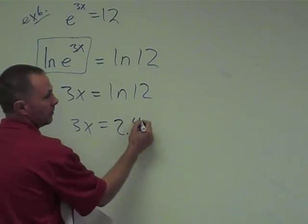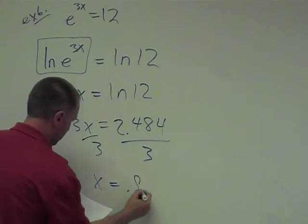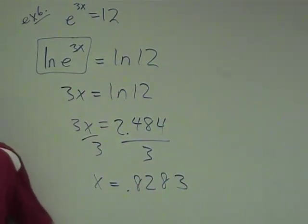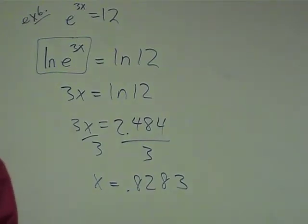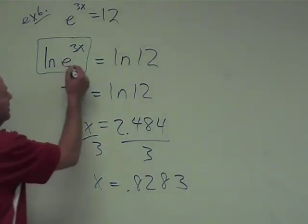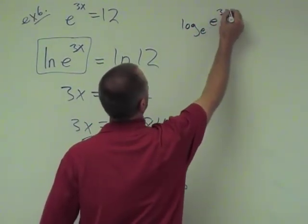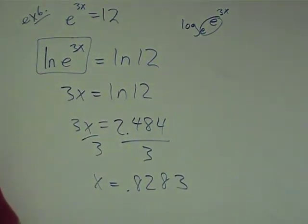Divide by 3 to get rid of the 3. This is the same thing as the log base e of e to the 3x. And if you have those being the same, the answer is just 3x. And that's the whole point. If you can take the log of both sides and change the way your exponents look, then that's what we want to do. So you're learning a new tool how to change the way things look.